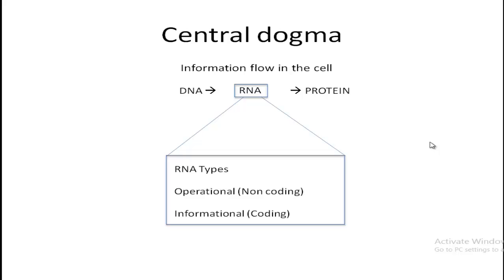We can classify RNA based on its coding nature into coding RNA and non-coding RNA. One may think that messenger RNA is the coding RNA, but that is not the case — messenger RNA also contains intronic regions, which are spliced out during mRNA splicing to produce the mature messenger RNA. So the better definition of coding RNA is the coding part of messenger RNA, and the rest of the RNAs are considered non-coding RNA.